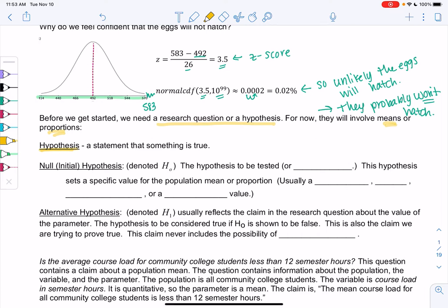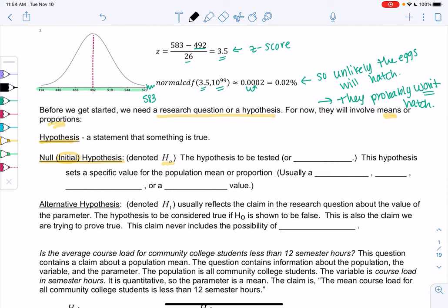You might have seen this in a science class, or when you read an English paper - your introduction states something and then you prove it. In statistics, we have the null or initial hypothesis, H0. This is the hypothesis to be tested or challenged. This hypothesis sets a specific value for the population mean or proportion. It's usually something that's claimed, might be an old value we want to prove has changed, something comparable or default.